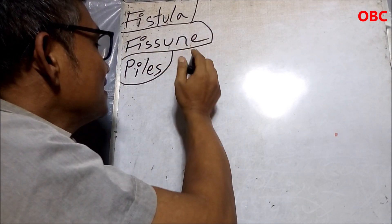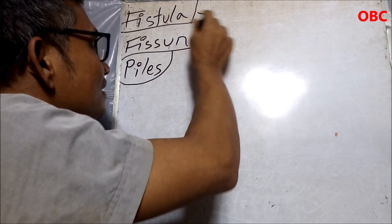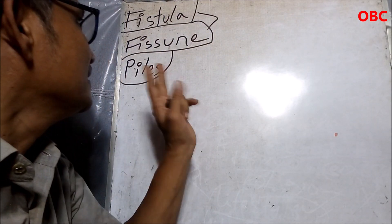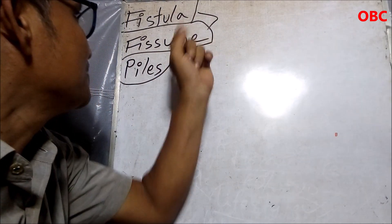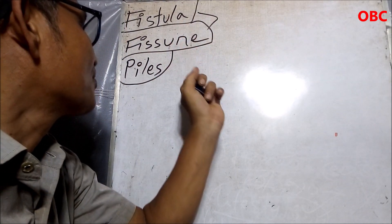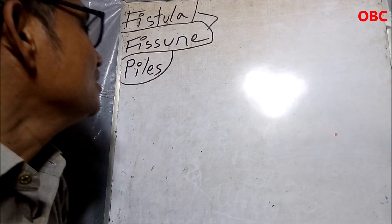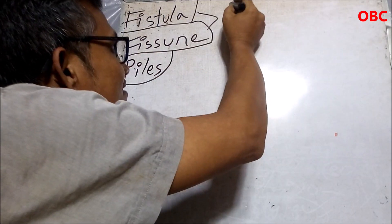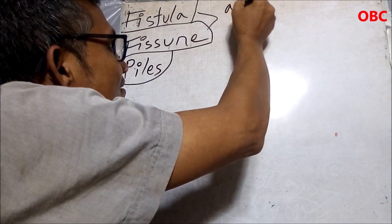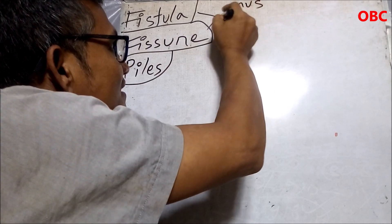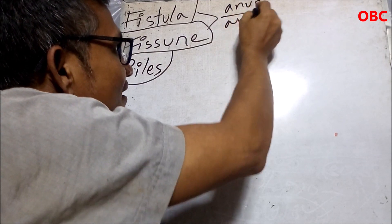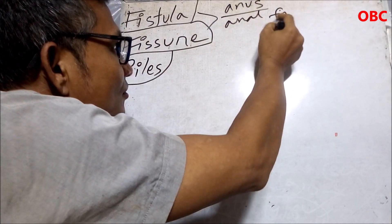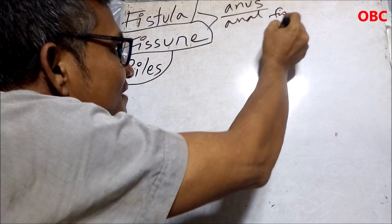Fistula and fissure are very similar — basically they are the same disease. But in the beginning, fistula is different from fissure. You usually have it in the anus. That's why it is called anal fistula or anal fissure.